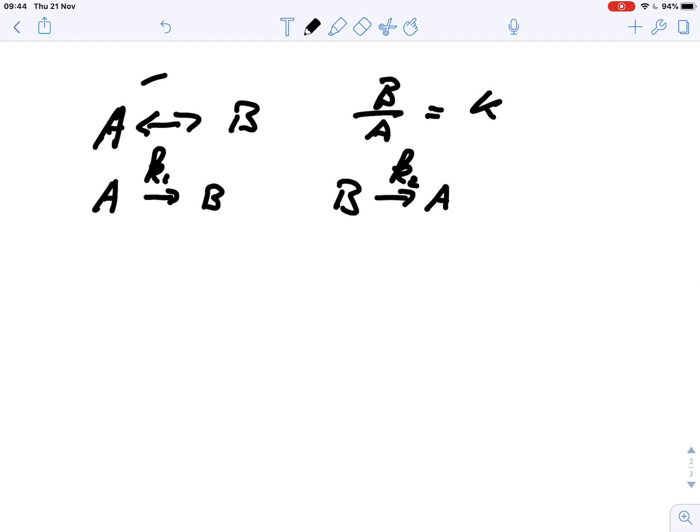So what we can now say is we know that at the equilibrium nothing happens. The reaction is neither going forward or backwards. Everything comes to a standstill. So we can write the concentration of A per time, or the change in A equals...